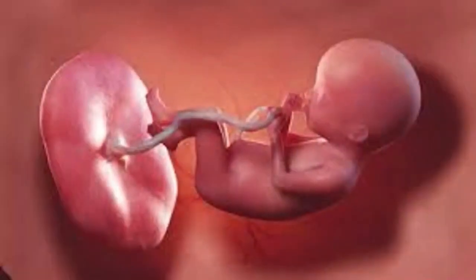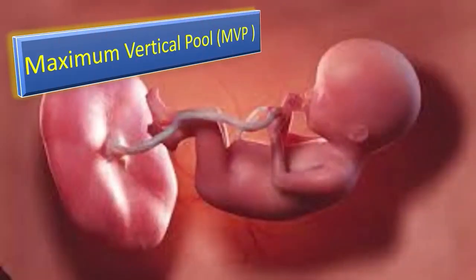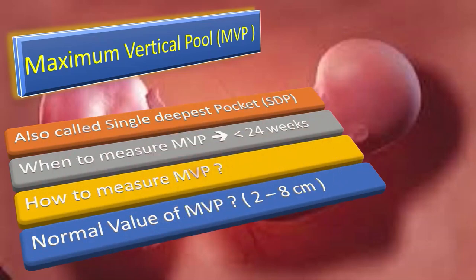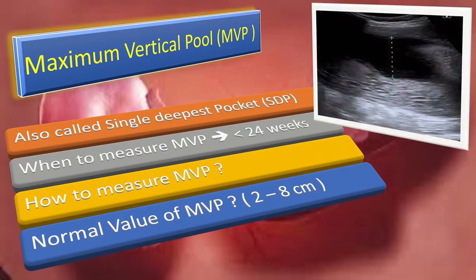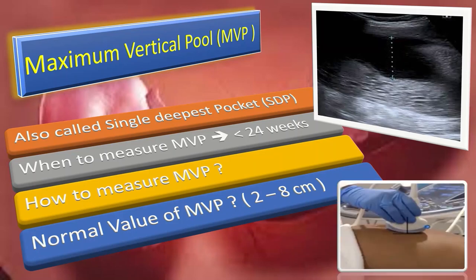The maximum vertical pool — also called the single deepest pocket, or SDP — is measured in both singleton and twin pregnancies at less than 24 weeks of gestation. To measure it, find the largest pocket of amniotic fluid free of cord and fetal parts, and measure the greatest dimension with the ultrasound transducer perpendicular to the uterus. The normal value of maximum vertical pool is 2 to 8 cm.